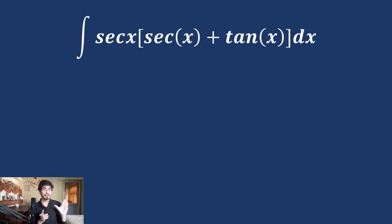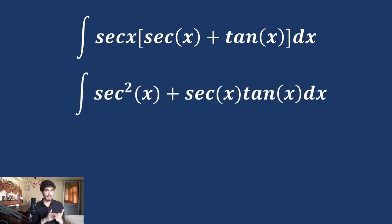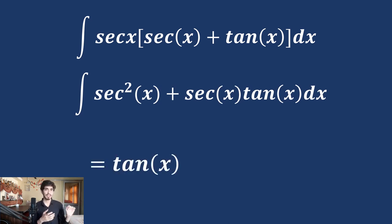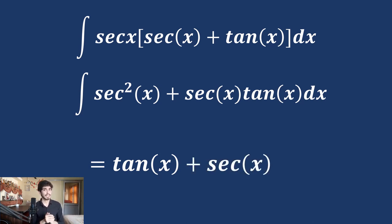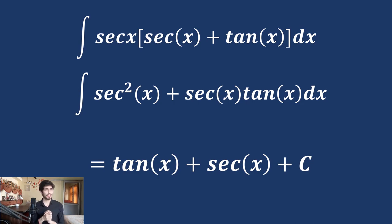Another quick question: find the integration of sec x multiplied by (sec x + tan x). Expand to get sec²x + sec x tan x. The integration of sec²x is simply tan x because the differentiation of tan x is sec²x. And the integration of sec x tan x is simply sec x because the derivative of sec x is sec x tan x. Always remember to add c, because these are indefinite integrals. For definite integrals, just apply the limits as covered in the previous video.